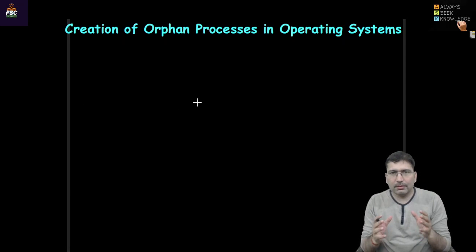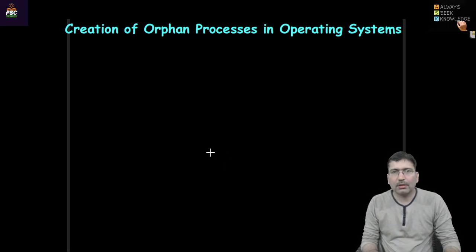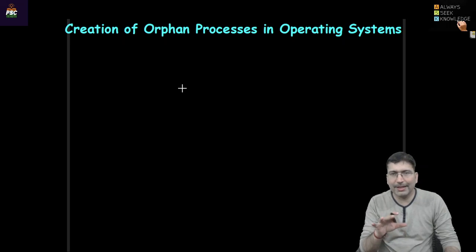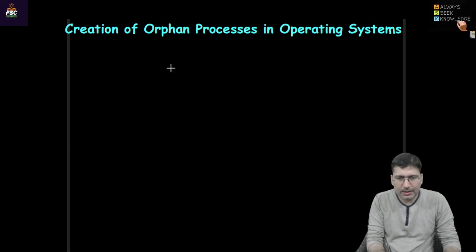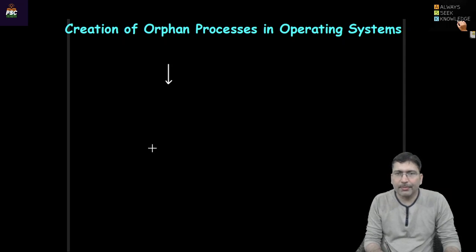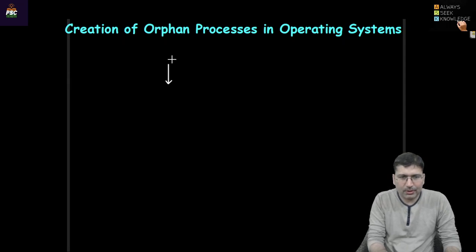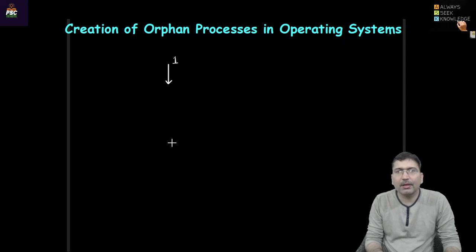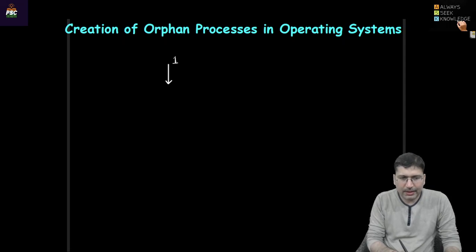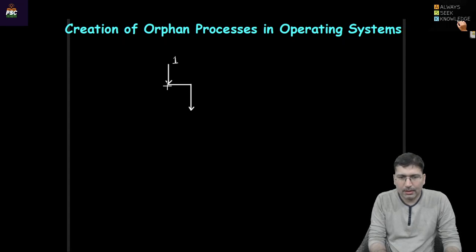In Unix-based or Linux-based systems — or you can consider Windows-based also — processes are maintained in a kind of hierarchical order. Initially, a process has been created when the system boots. So let's say the getty process or init process — the initial mother process — will be created in the system and that process will have some initial process ID, let's say one. After this, n number of other processes may be initiated.